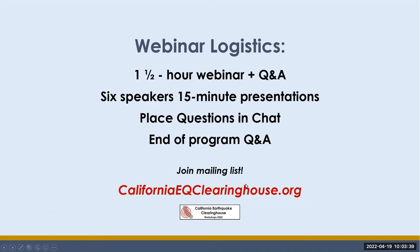The webinar logistics include about an hour and a half of speakers — six speakers talking for approximately 15 minutes each. Please place your questions in chat as they come up, and at the end of the program we have a half hour dedicated to answering all those questions. Video recordings will be posted on CaliforniaEarthquakeClearinghouse.org once the second webinar is done. Check out the mailing list — that is how you find out about activations when an earthquake occurs and the Clearinghouse is activated.